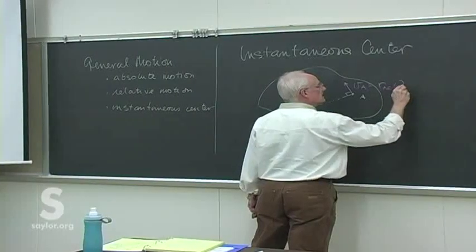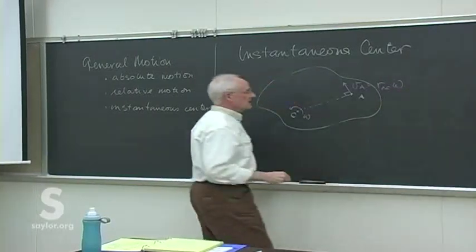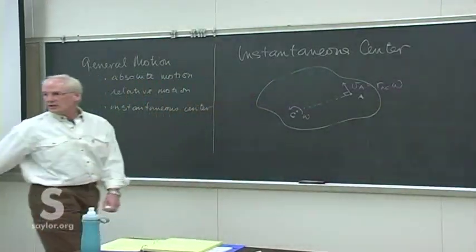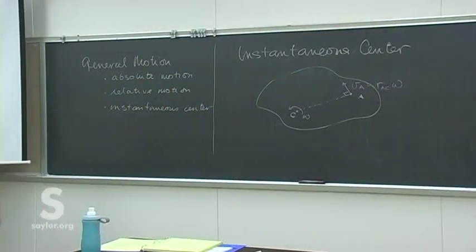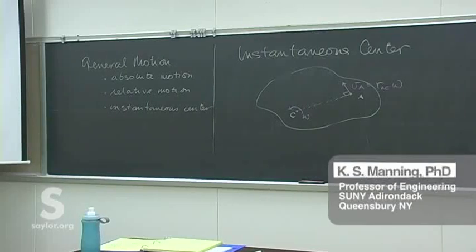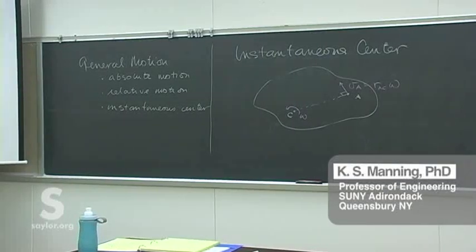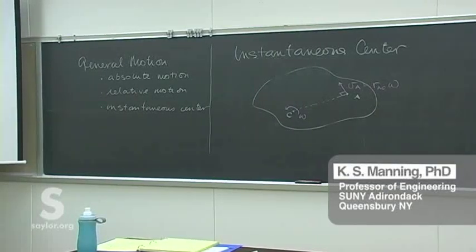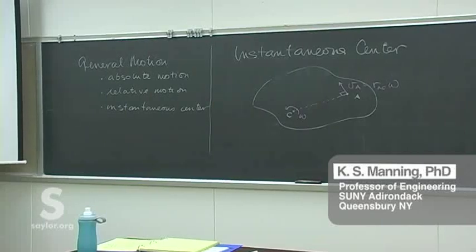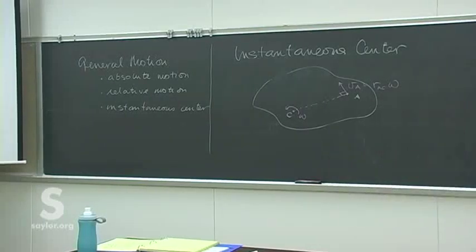Times the rate at which the object is turning — we did that in physics 1. V equals R omega. Look familiar? I hope. If not, sue your physics 1 professor.